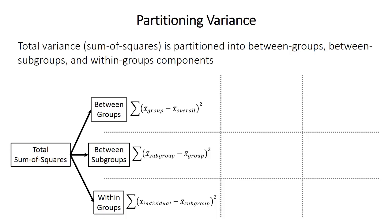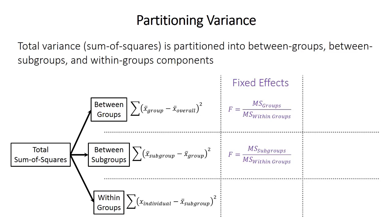Nested ANOVA starts with the general ANOVA approach of partitioning variance or sum of squares into between groups, between subgroups, and within groups components. F-statistics are then calculated, but the calculation depends on whether subgroups are fixed or random effects. If subgroups are fixed effects, the F-statistic for the main group is the between groups mean square divided by the within groups mean square, and the F-statistic for the subgroup is the between subgroup mean square also divided by the within groups mean square. If subgroups are random effects, the F-statistic for the main groups is the between group mean square divided by the between subgroup mean square.